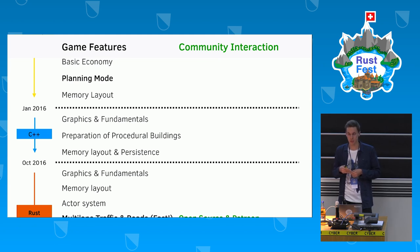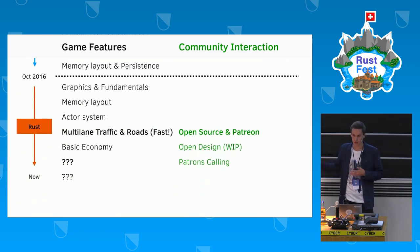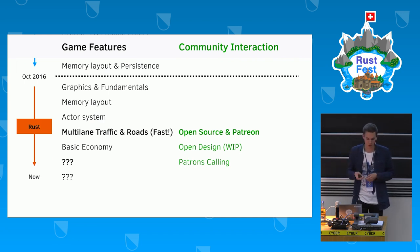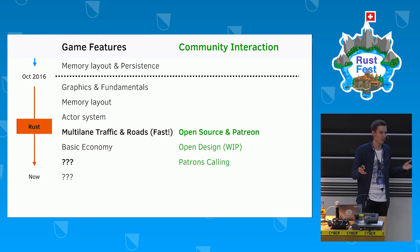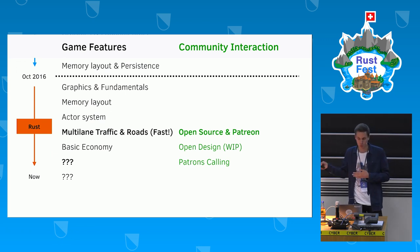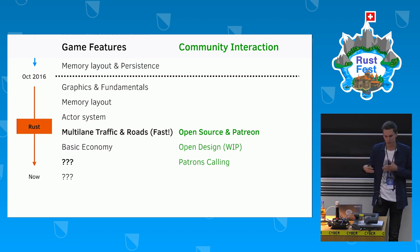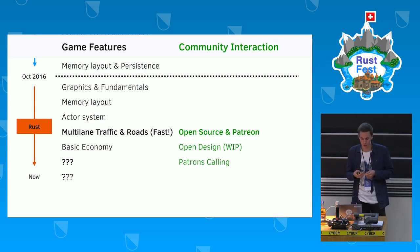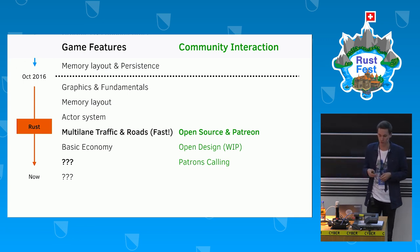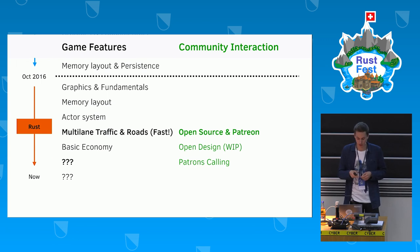I realized that continuing with C++ I would probably finish within my lifetime but would also go insane. Luckily I heard about Rust, and it seemed stable enough to try. I got blazingly quickly through the graphics and fundamentals thanks to projects like Glium, and Rust let me do difficult low-level work while abstracting nicely. I decided to make the project open source, releasing the first traffic simulation prototype to my fans, and launched a Patreon page. Since then I've been reiterating all the different game features needed.